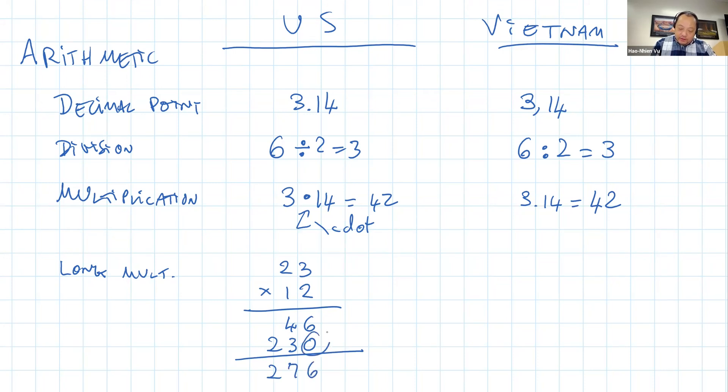we get 46 on the first line and 230 on the second line for a total of 276. In Vietnam, this extra zero here that denotes the tenth place of the number 1—this number 1 here is not one, it's 10, so that's why there's an extra zero there for the tenth place.